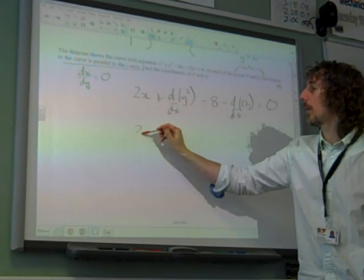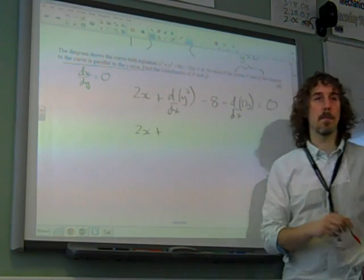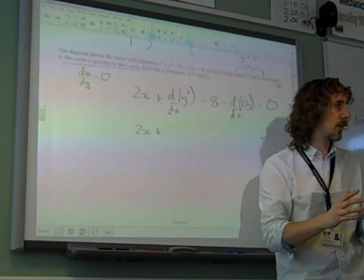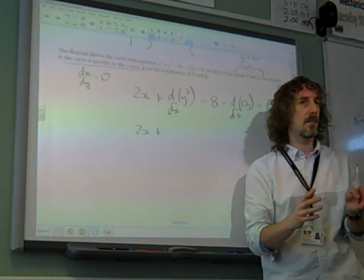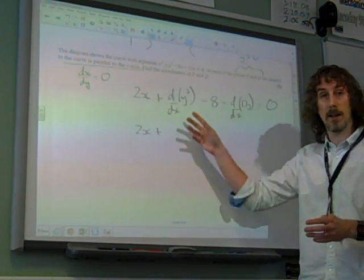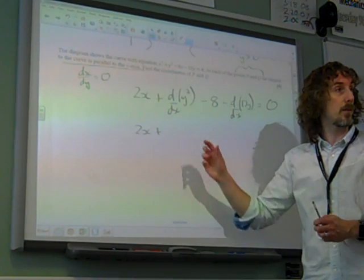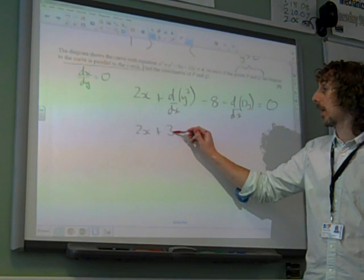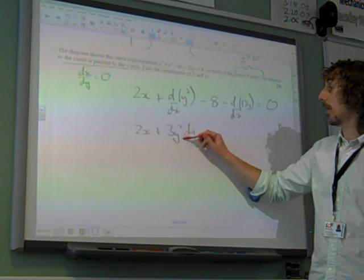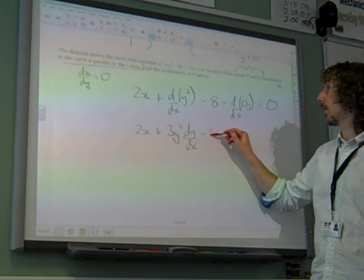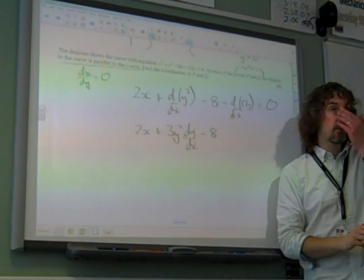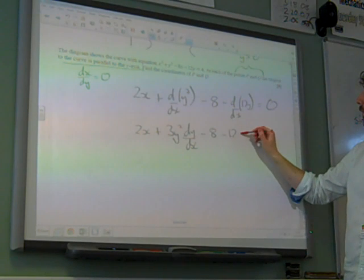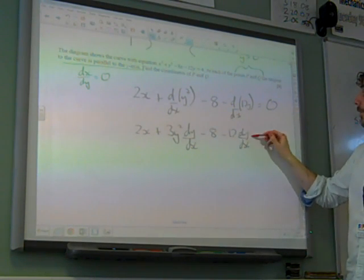So we're going to get 2x. If you're differentiating a y thing with respect to x, we'll use the chain rule. And say we differentiate it with respect to y, and times it by dy/dx. If you differentiate y cubed with respect to y, you get 3y squared, times dy/dx. And same thing here, if we differentiate 12y with respect to y, we get 12. So that's 12 dy/dx.